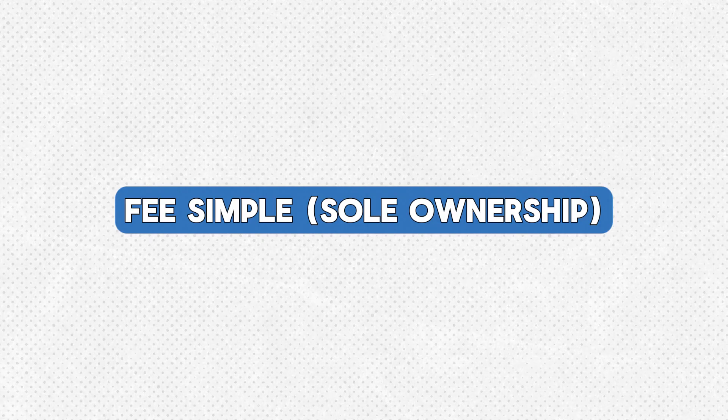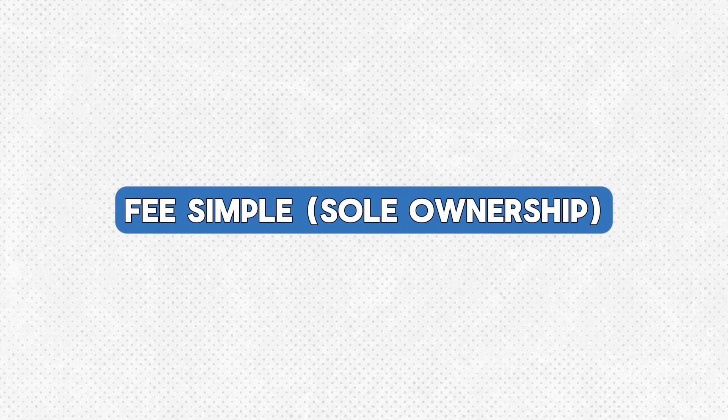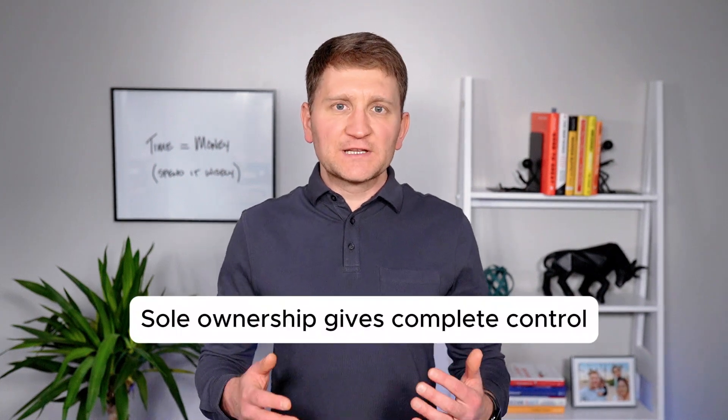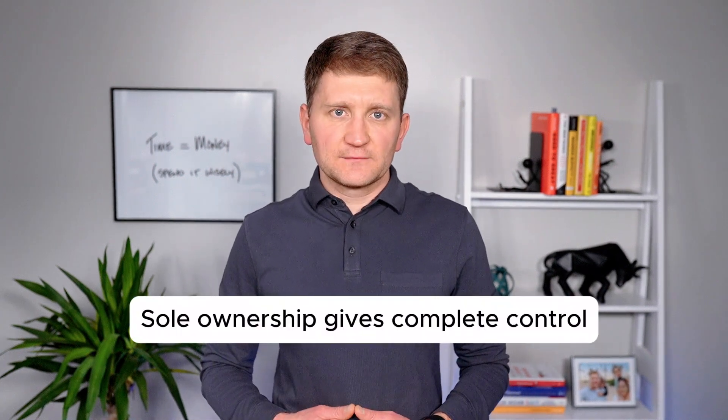Now let's take a closer look at how these interests are reflected in different types of ownership. Sole ownership, also called fee simple, is the simplest form of property ownership, giving one person complete control and rights over the asset. This means you can use, sell, gift, or leave the property as you choose. For example, if you own a savings account, car, or home solely in your name, you have full control.